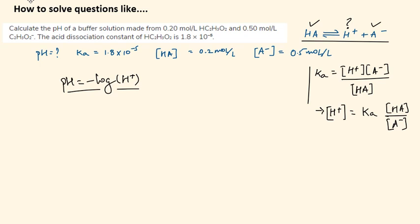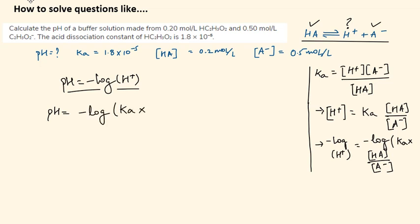So this is one thing and we have to calculate the pH. So if we take negative log of H plus and I also take the negative log on this side, that is Ka times HA over A minus, I get a beautiful equation which I will write in the main area. So negative log of H plus is nothing but pH.